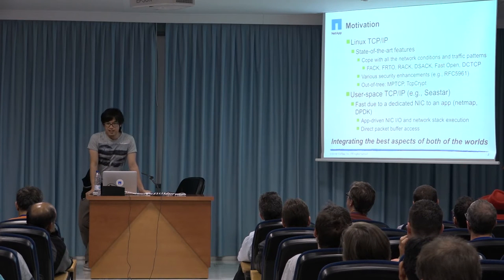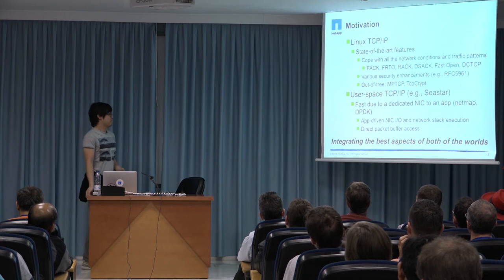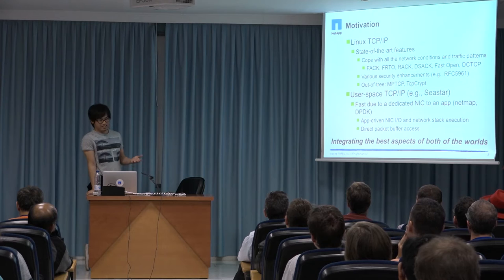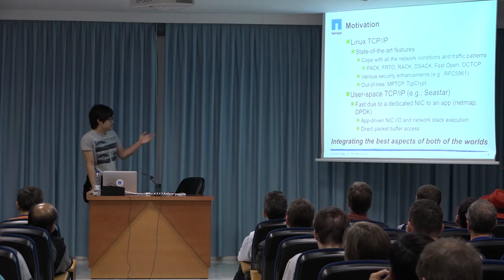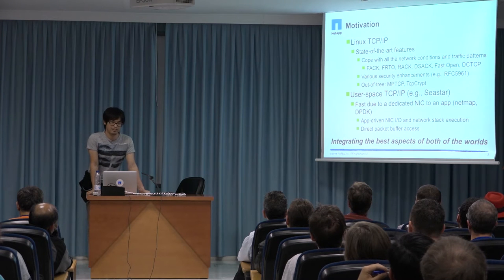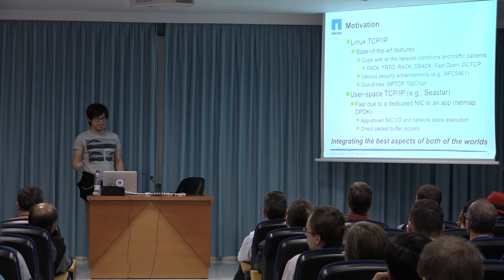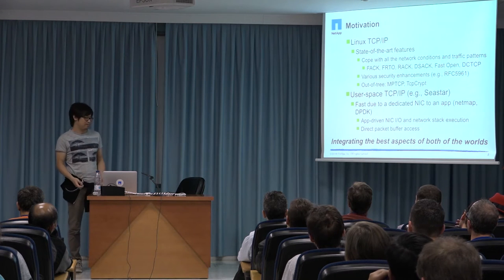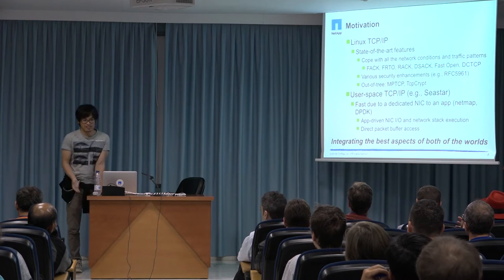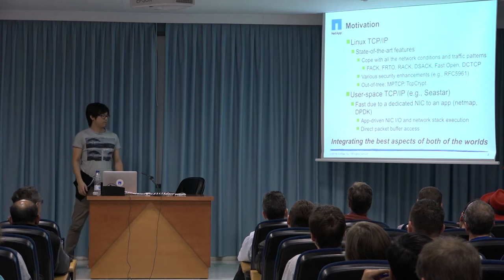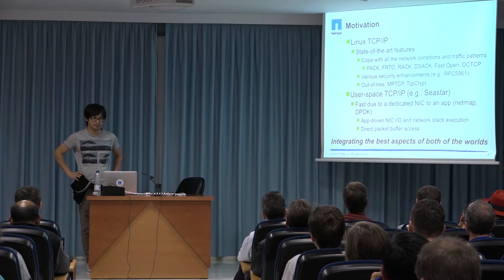Why user-space TCP/IP is fast — some people say it's because of zero copy, but that is not the real reason because copy is not expensive anymore. The real reason is basically that they dedicate a NIC to a single application. Linux TCP/IP stack is designed to share the NIC among all applications, but user-space TCP/IP dedicates a NIC to a single privileged application. Because of that, they can execute NIC RSS, YOLI, TMA based on application preference, and execute a network stack whenever they like. Both Linux TCP/IP and user-space TCP/IP are excellent, and we want to integrate the best aspects of both worlds. That is our motivation.